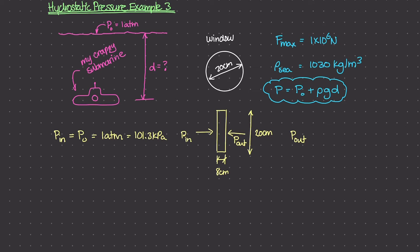p_in is equal to p₀, maintained at one atm or 101.3 kilopascals. p_out is the pressure at depth d, given by the hydrostatic equation: p_out = p₀ + ρgd. Since we know the window's diameter is 20 centimeters, we can calculate the maximum pressure the window can experience: p_max = F_max / Area.